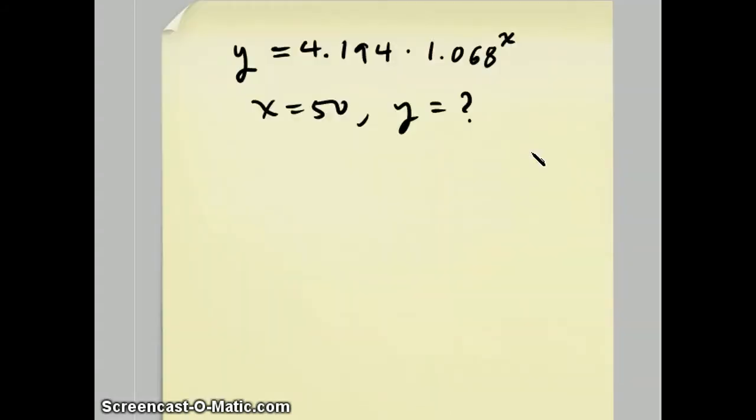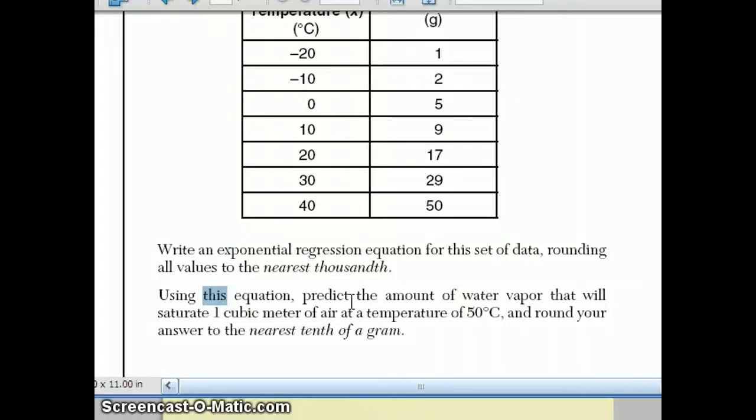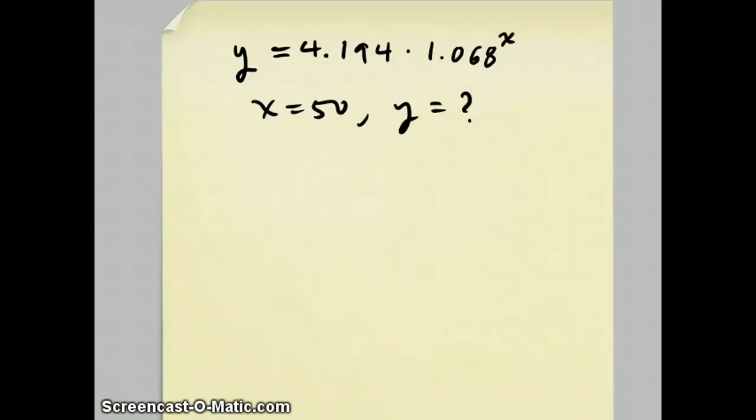So when you plug in 4.194 times 1.068 raised to the 50th power you get 112.5. They want you to round this answer to the nearest tenth of a gram. So y equals 112.5 and that's how you do that.